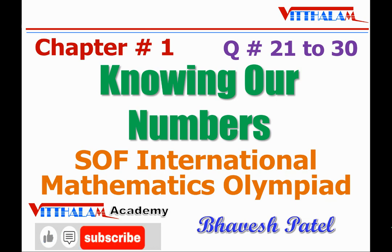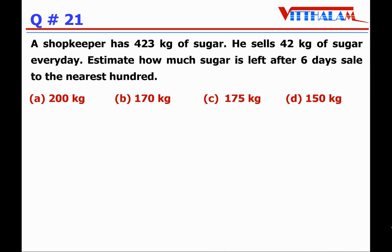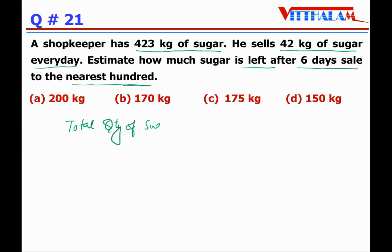Let's solve one by one. First section: Everyday Mathematics. Question 21: A shopkeeper has 423 kg of sugar. He sells 42 kg of sugar every day. Estimate how much sugar is left after six days, to the nearest hundred. So the shopkeeper has 423 kg of sugar, and every day he sells 42 kg. Total quantity of sugar sold by the shopkeeper in six days: